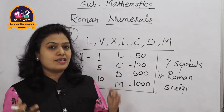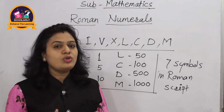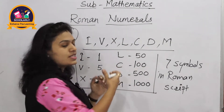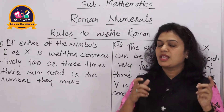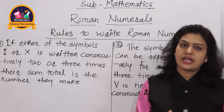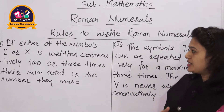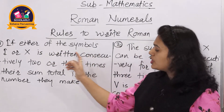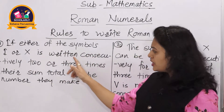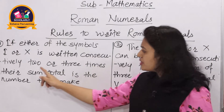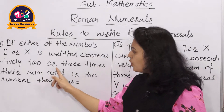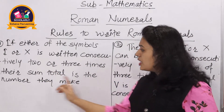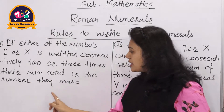Let's learn the rules for writing Roman numerals. The first rule is: if either of the symbols I or X is written consecutively two or three times, their sum total is the number they make.